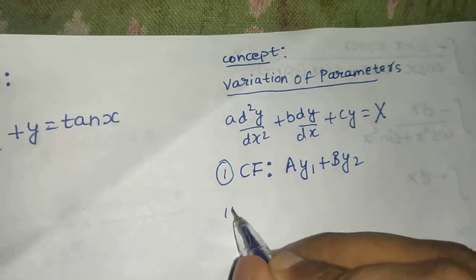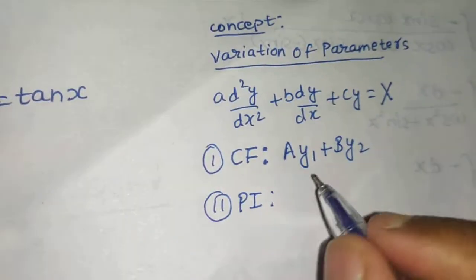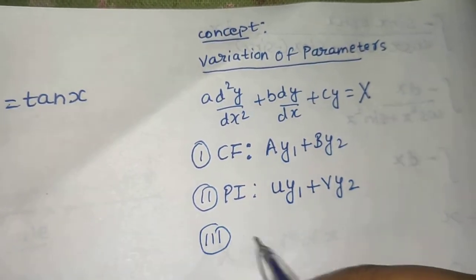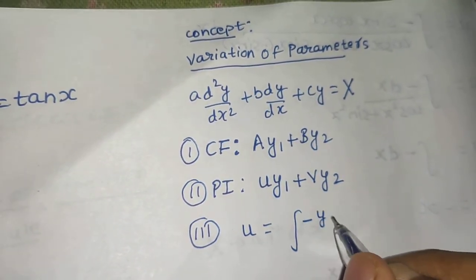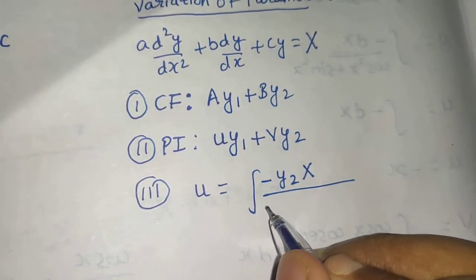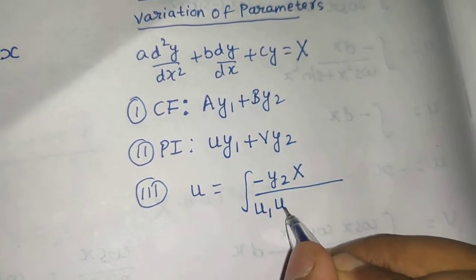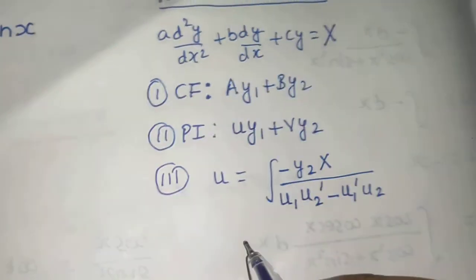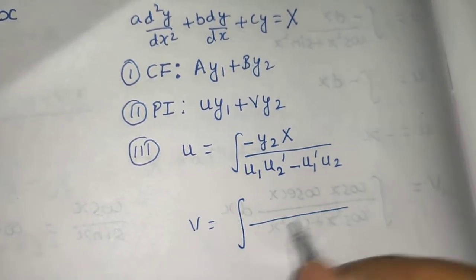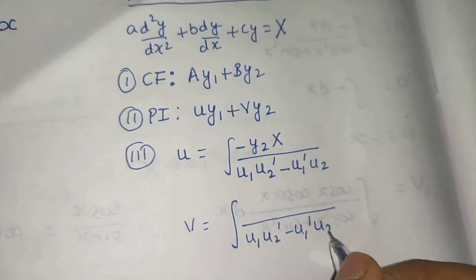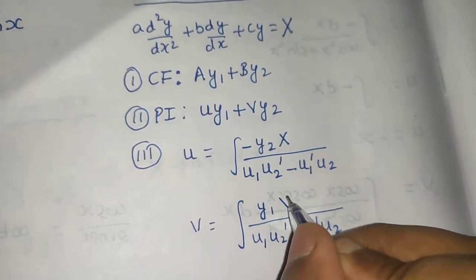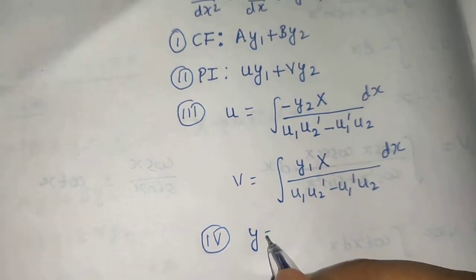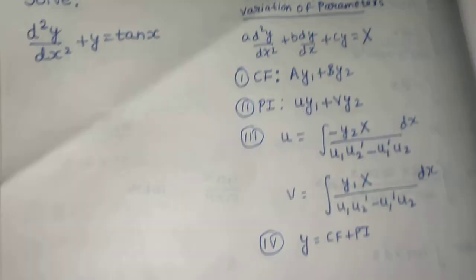The second step is to find the particular integral, which will be of the form u·y1 + v·y2. To find u, take the integral of minus y2·X divided by the Wronskian (y1·y2' − y1'·y2). For v, the same denominator applies with y1·X in the numerator. The final solution is always y = CF + PI.